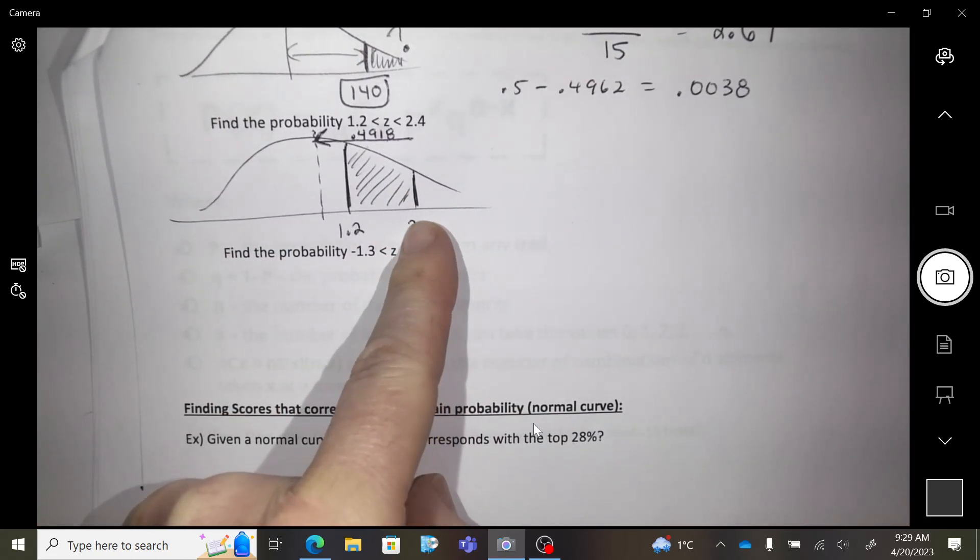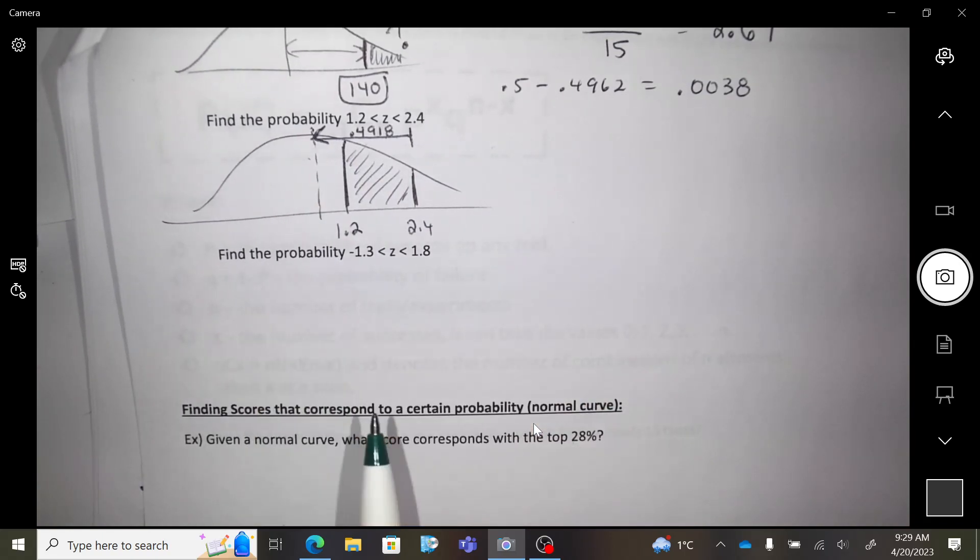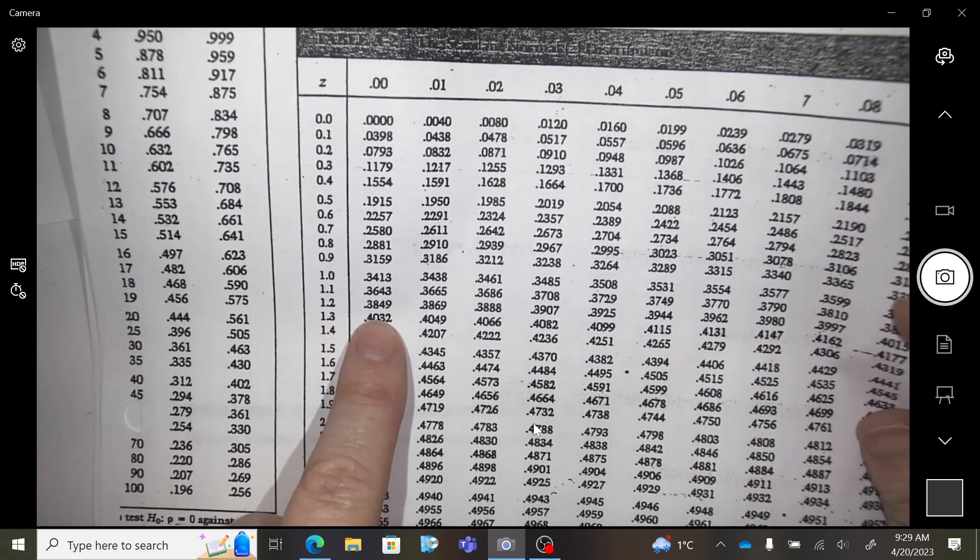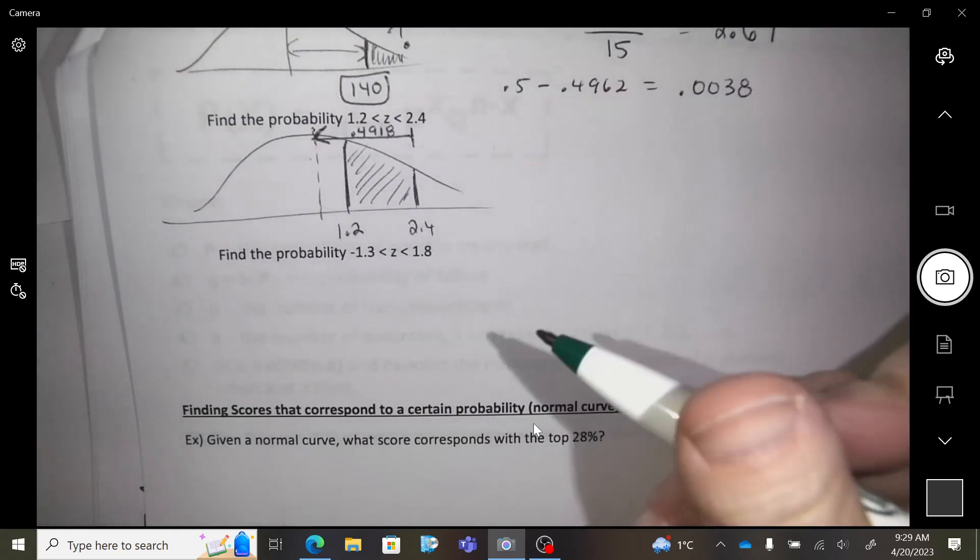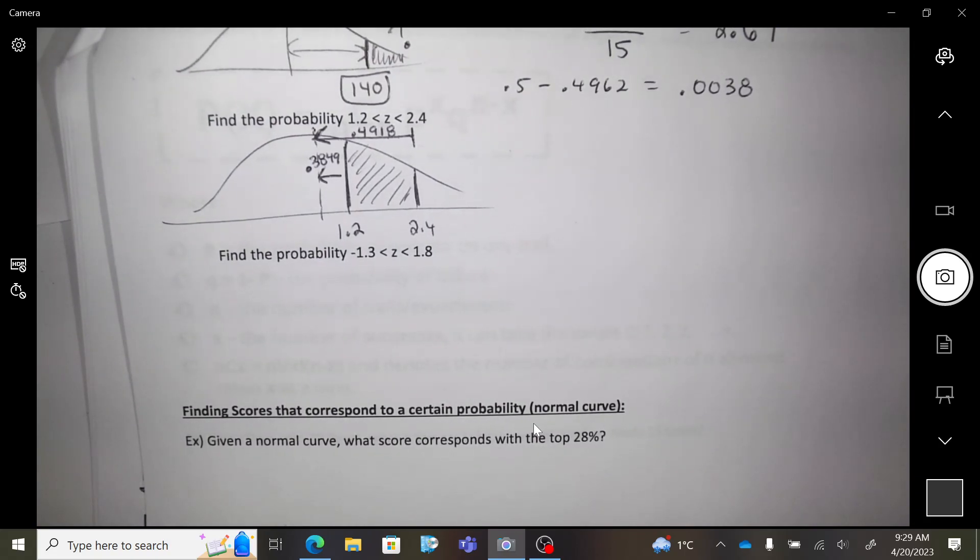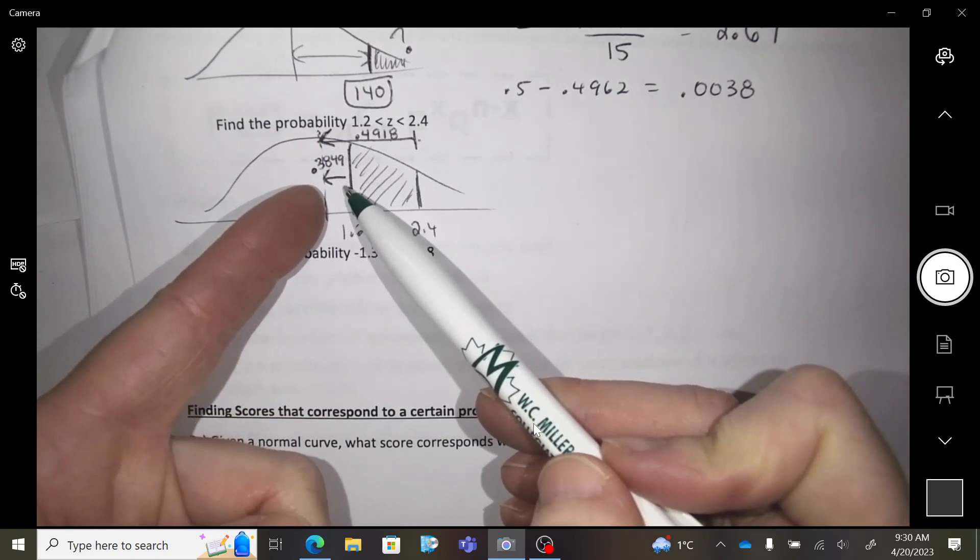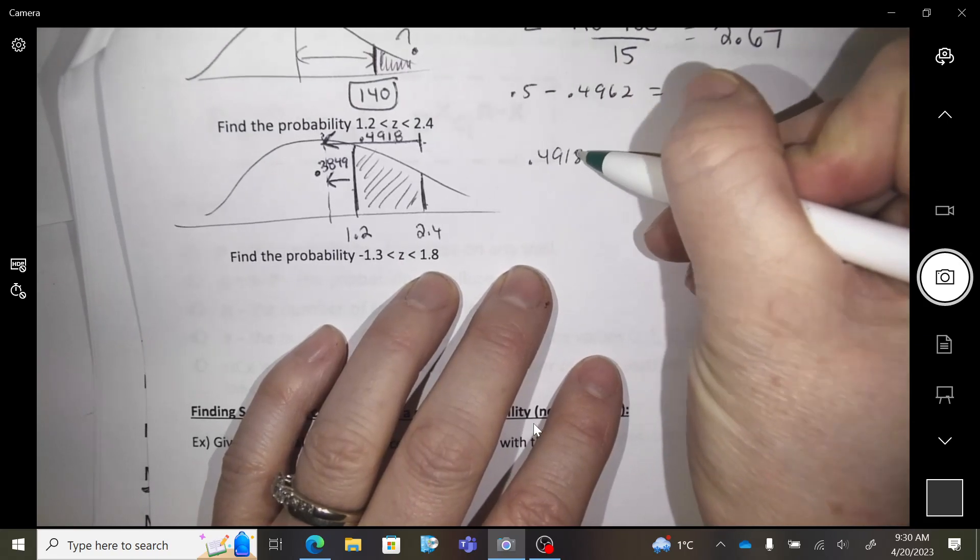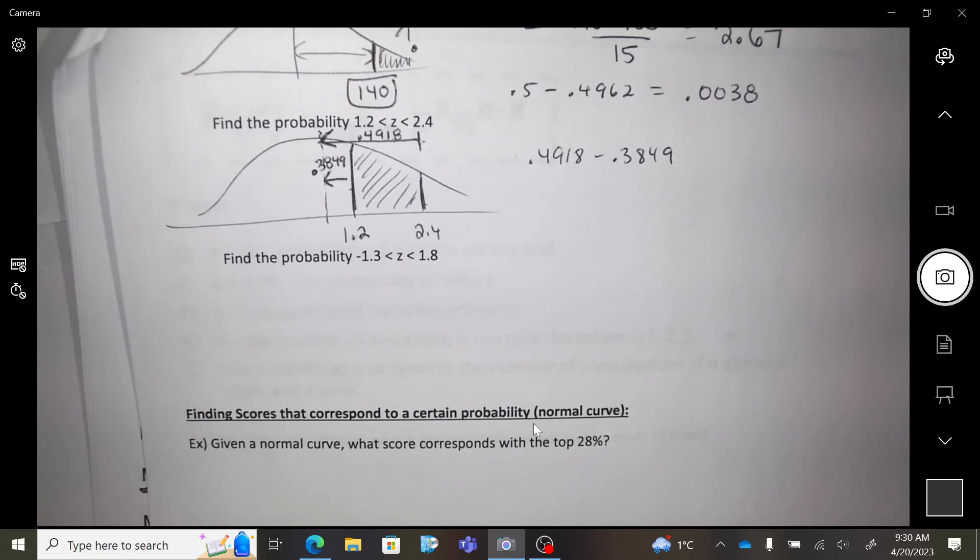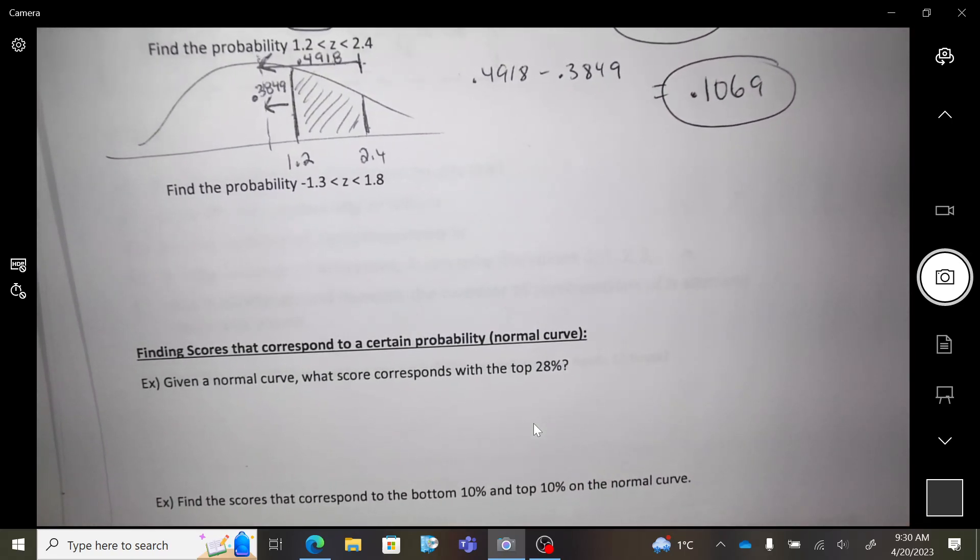So that is 49.18%. Now can you look up a 1.2? So 1.20 is 0.3849. And what do you want to do with those numbers? Add them or subtract them or use a 50%? What would make sense? If I take this full distance minus that distance, I'm going to get that. So subtract them. So 10.69% of the population is between.